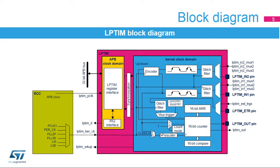The low-power timer features an encoder mode function that can be used to interface with incremental quadrature encoder sensors using the peripheral's LP-TIM-IN1 MUX and LP-TIM-IN2 MUX inputs. Both inputs feature glitch-filtering circuitry.